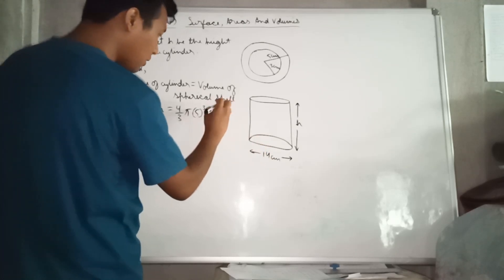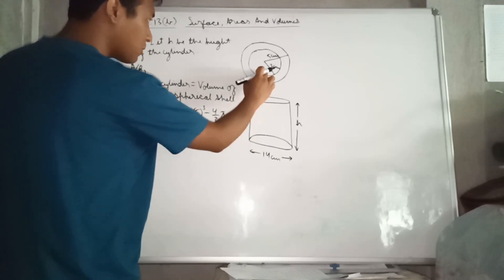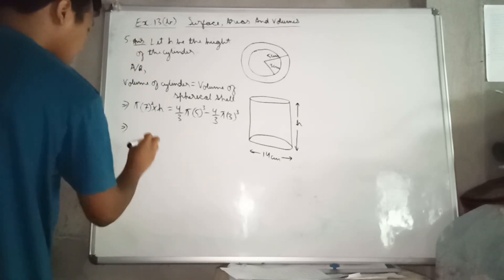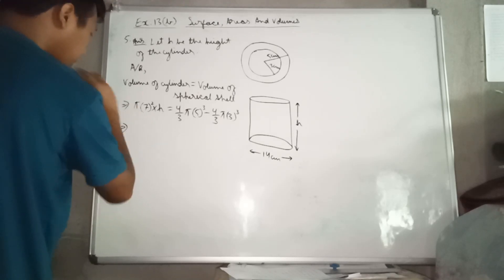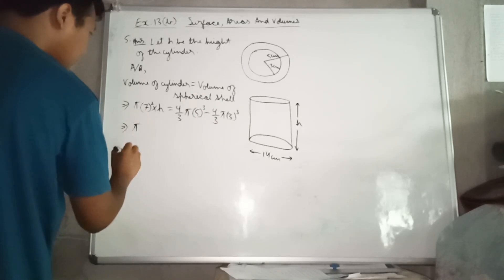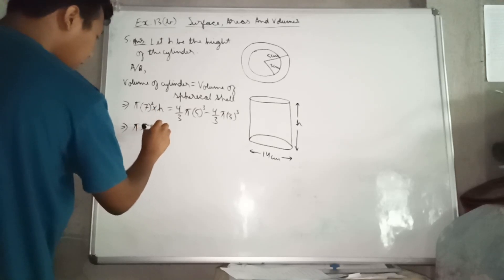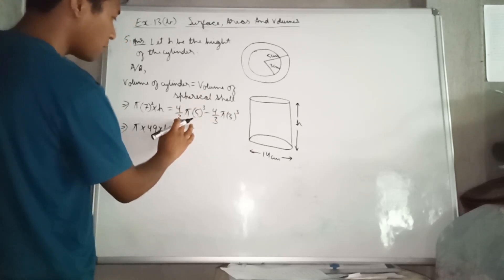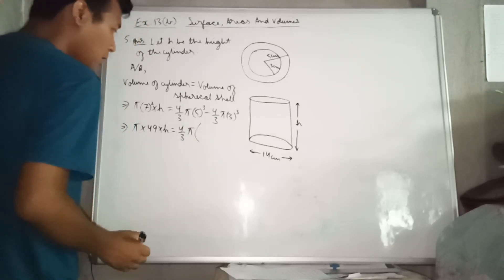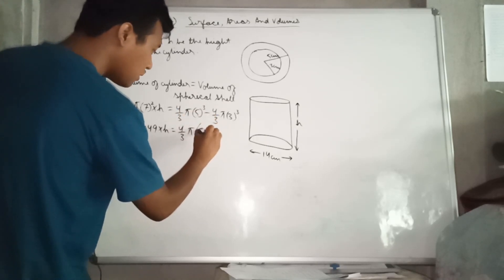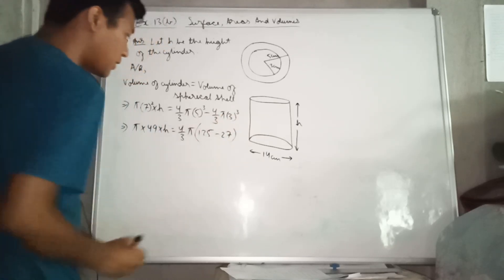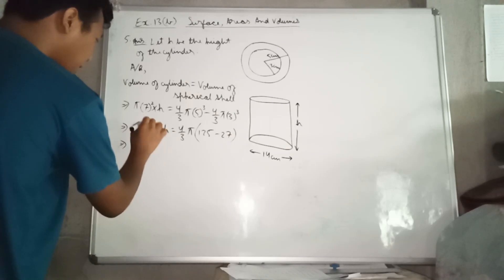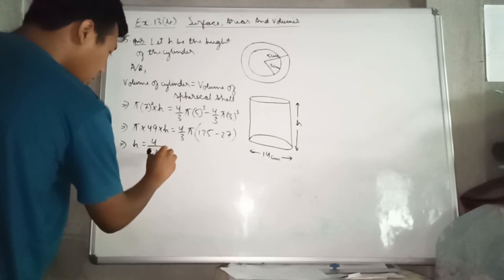Internal volume = (4/3) π × 3³. So the equation becomes: π × 7² × h = (4/3) π × 5³ − (4/3) π × 3³, which simplifies to 49h = (4/3)(5³ − 3³).